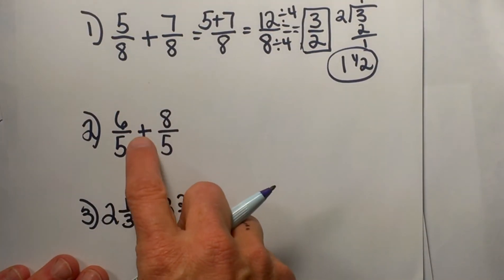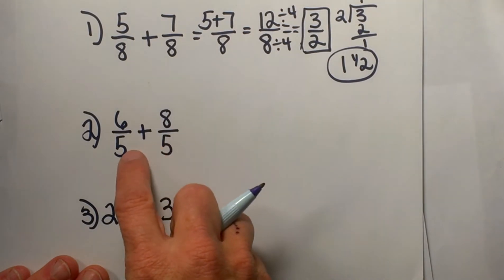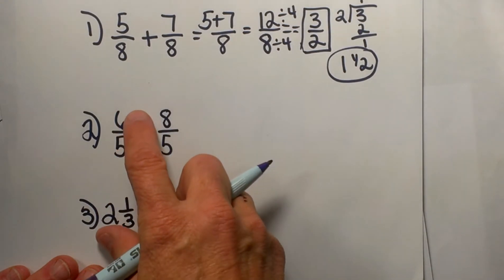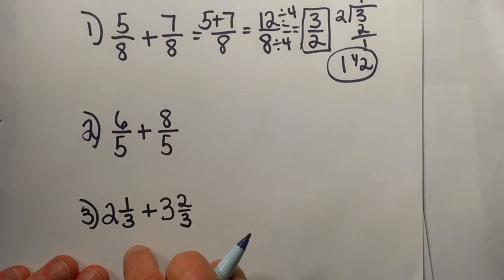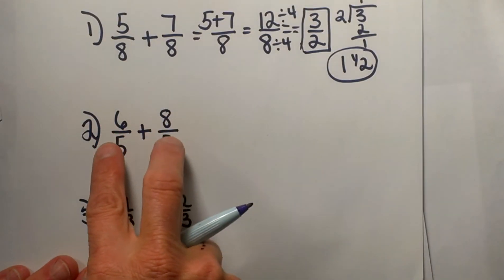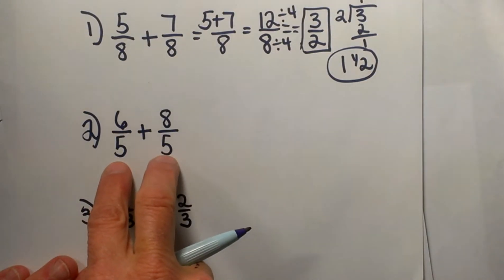How about 6/5 and 8/5? Now on these we have improper fractions, which means the numerator is larger than the denominator, but as long as our common denominator is the same, then we are fine.